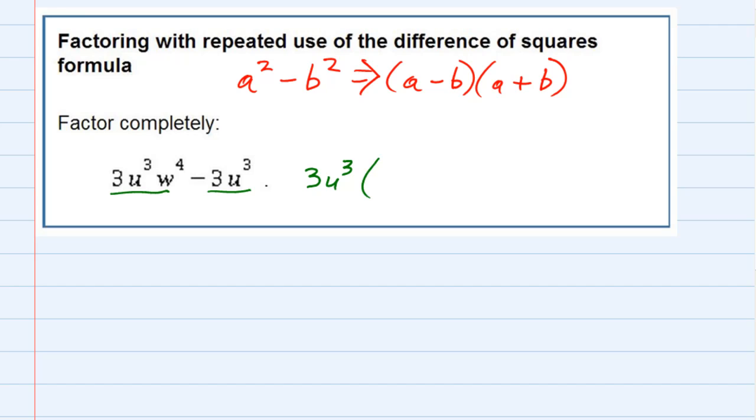So if I'm factoring that out, I would divide each one by a 3u³ and see what's left. In the first one, the 3s cancel, the u³s cancel, I have just the w⁴. And in the second one, the u's cancel, and the 3s cancel, leaving me with minus 1.